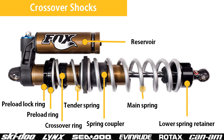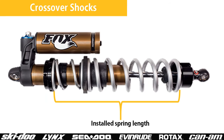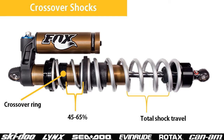A dual spring shock has a mainspring and a tender helping spring, which combine to give a softer initial spring rate with a stiffer spring rate deep into travel. The installed spring length is measured when the shock is assembled, but not on the vehicle. The spring should not be loose, meaning that at least the minimum spring preload is applied. The shock's resistance to bottoming out can be tuned by adjusting the crossover ring. The spring crossover is the point in the shock travel where the spring rate increases. A softer initial spring rate offers improved handling while a higher spring rate deep into travel helps to resist bottoming out.